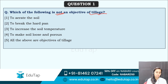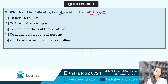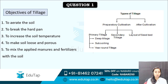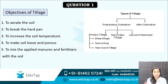Today we are going to discuss 10 very important questions. Yesterday we discussed 15 questions. I can see option 3 — to increase the soil temperature — why are you all going with that? The answer is all of the above are actually the objectives of tillage. Objective does not mean that a particular thing has to be done. The temperature of the soil will be increased indirectly also. If the hard pan is removed, the temperature of the soil is going to increase.